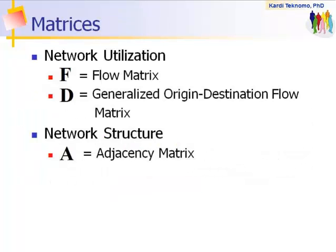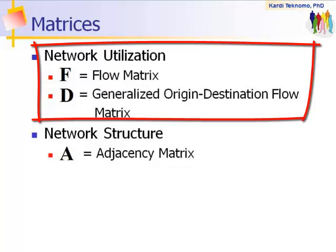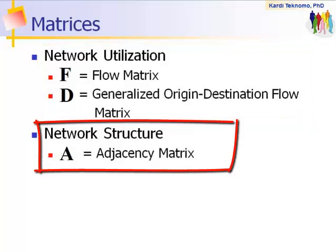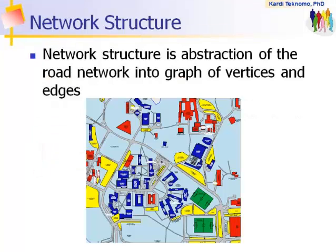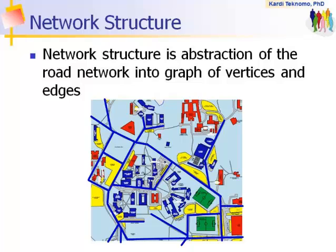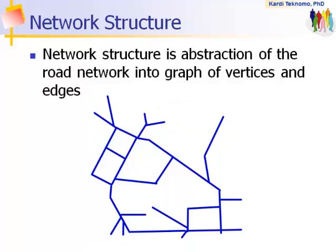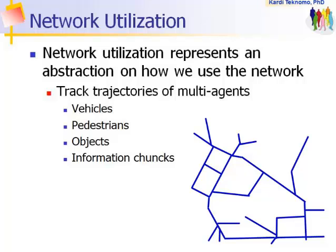I would like to show you the relationship between network utilization in terms of flow matrix and generalized origin-destination flow matrix and network structure in terms of adjacency matrix. Network structure is an abstraction of the road network into graph vertices and edges. Utilization represents an abstraction on how we use the network.